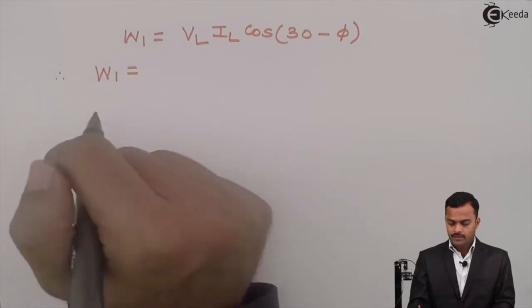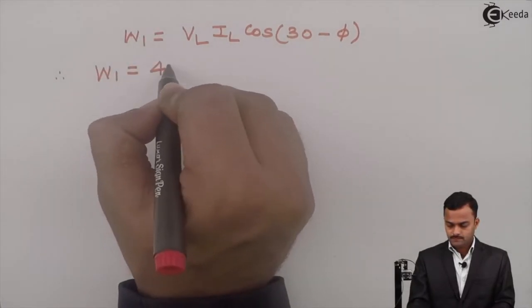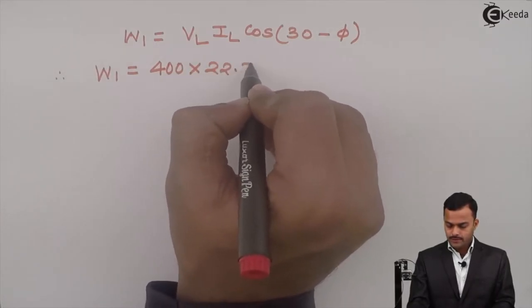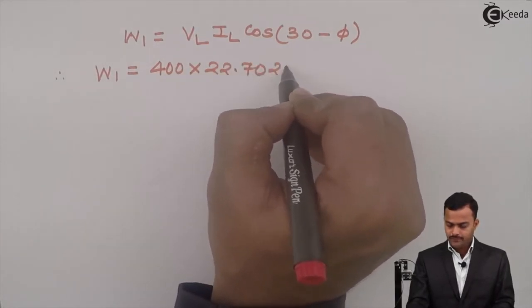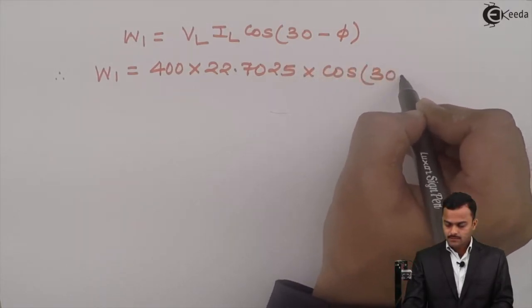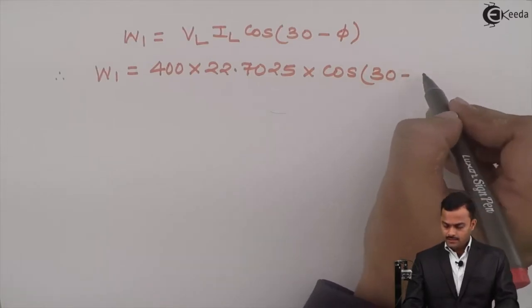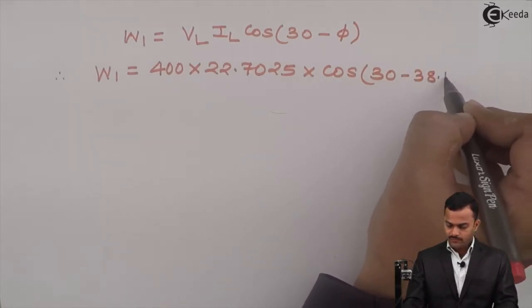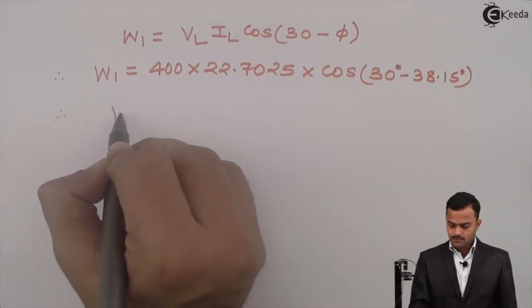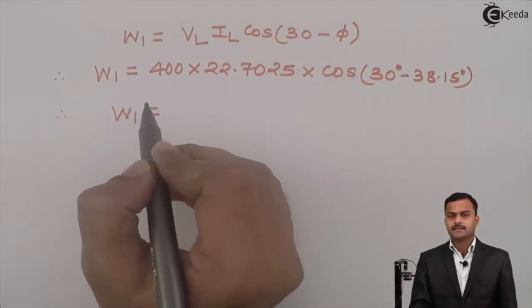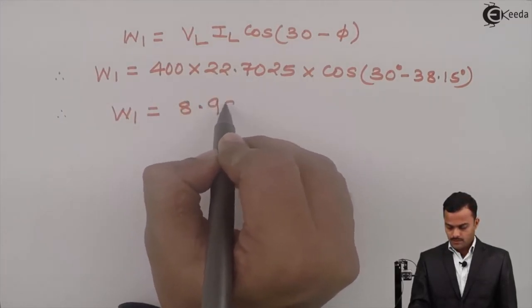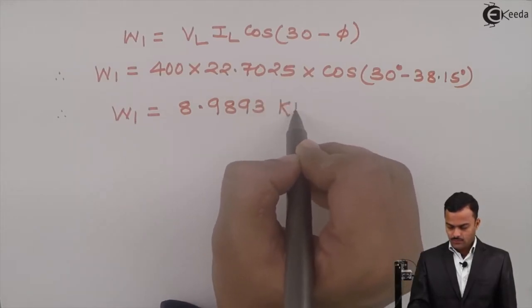So W1 equals 400 times 22.7025 times cos(30 minus 38.15). Wattmeter one reading W1 equals 8.9893 kilowatts.